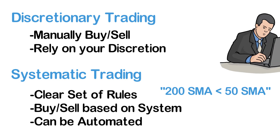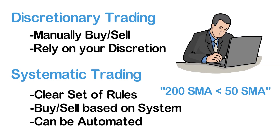The discretionary trader, on the other hand, would rely on their discretion, market awareness, a variable set of indicators, intuition and their own judgement to decide whether the current market is in an uptrend or not.